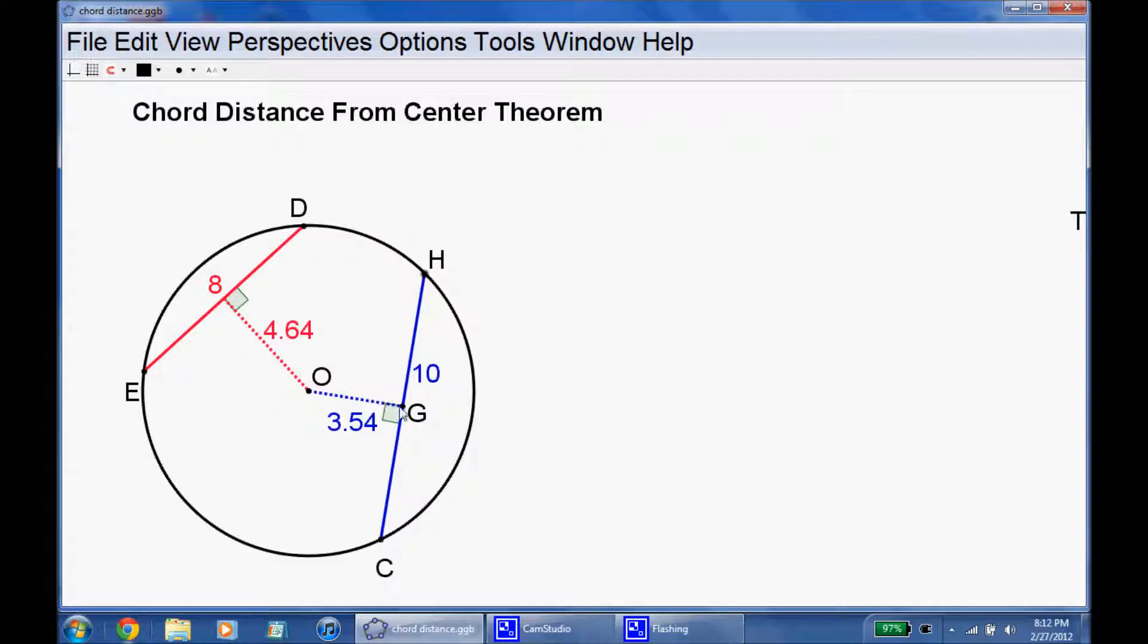Now, the blue dotted line tells you how far away the blue one is. One thing you should notice is that this is 3.54, the blue distance away from the center of the circle. This red one is 4.64. However, the red one is 8, the blue one's 10, the red one's smaller.